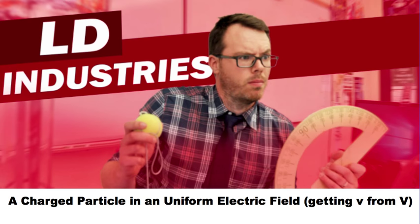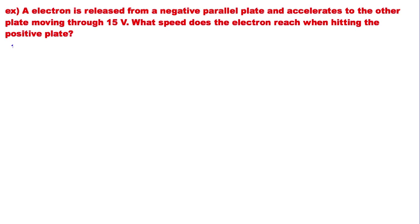Here's what the question looks like. So you've got a particle with a charge, in this case it's an electron. It's released in a pair of parallel plates. These parallel plates are going to provide a uniform electric field and accelerate the particle. The electron is released from the negative parallel plate and accelerates to the other plate. When it does this, it moves through 15 volts potential difference. This is kind of the energy per unit of charge it's going to gain. What speed does the electron reach when it hits the positive plate?